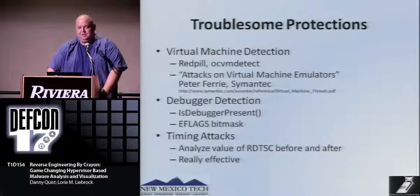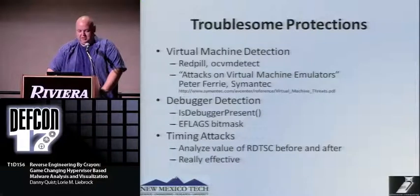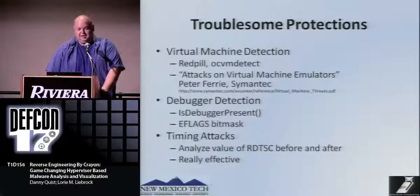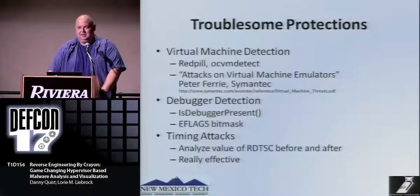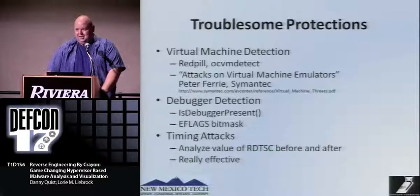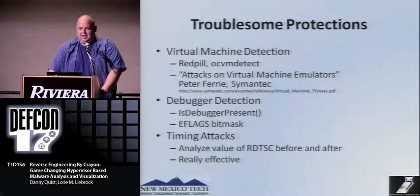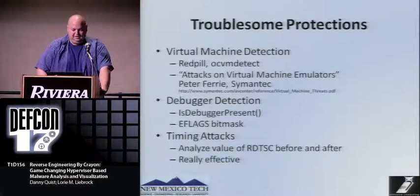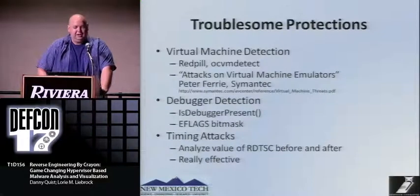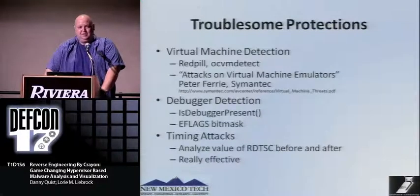There are other troublesome protections. The first is virtual machine detection — Joanna Rutkowska built Red Pill, and we developed OCVM Detect. Detecting that you're inside a VM is very easy. There's an excellent paper called 'Attacks on Virtual Machine Emulators' by Peter Ferry that goes through every VM available at the time with roughly 10 assembly instructions on how to detect each. Debugger detection looks at the process execution block and checks the IsBeingDebugged flag and the E-flags trap flag. Timing attacks use the time stamp counter — read it before and after some instructions and check if the delta is inordinately large.